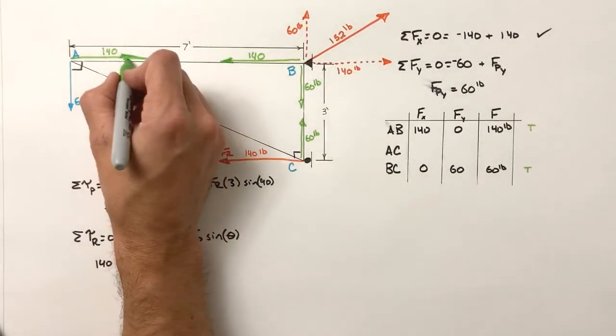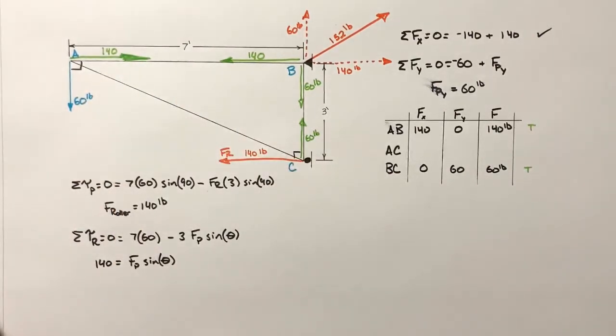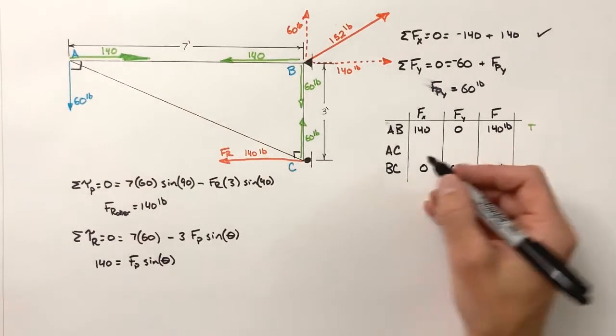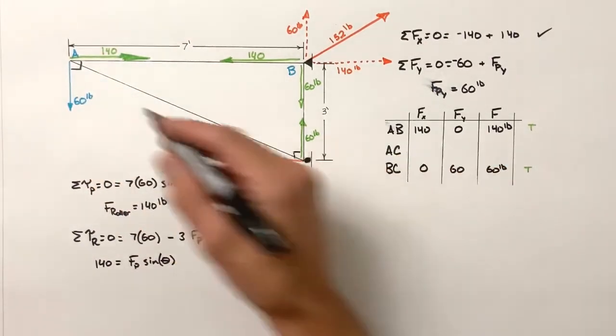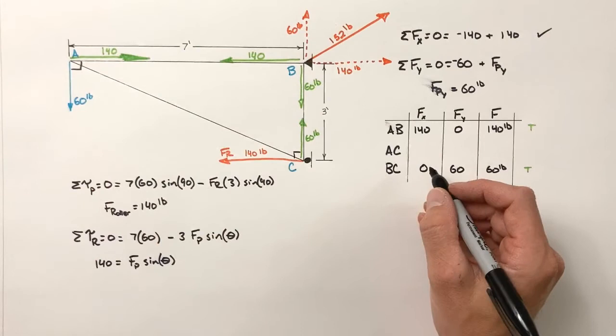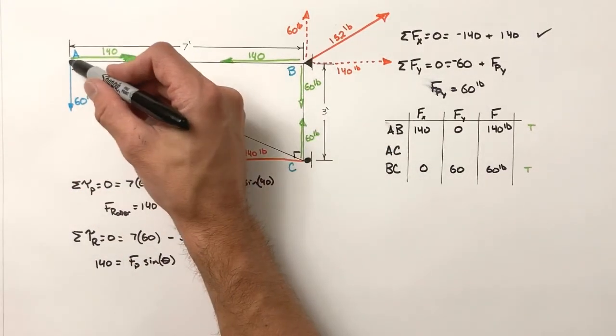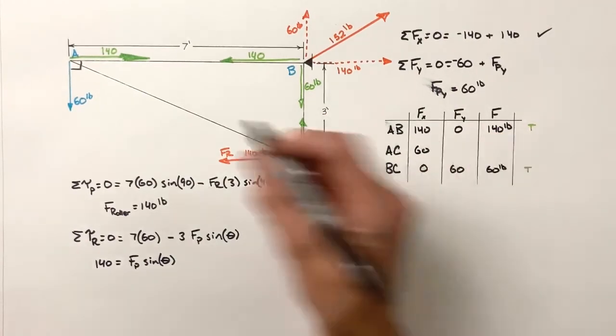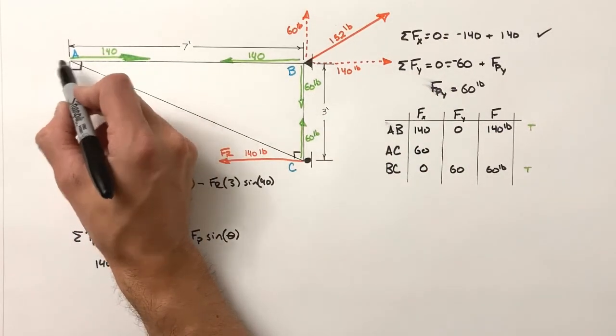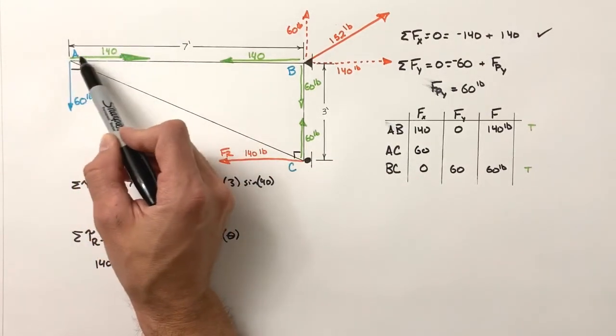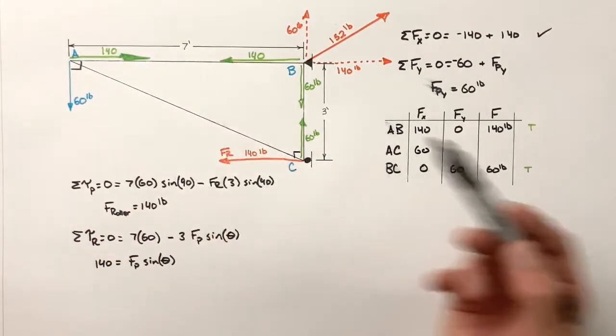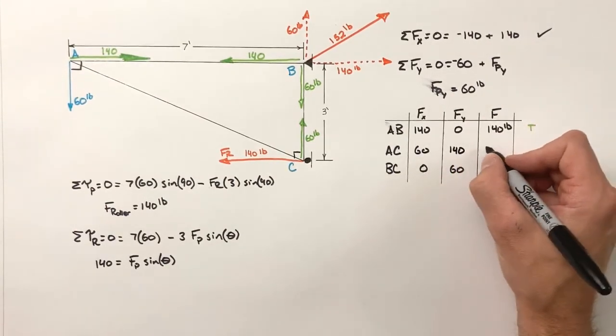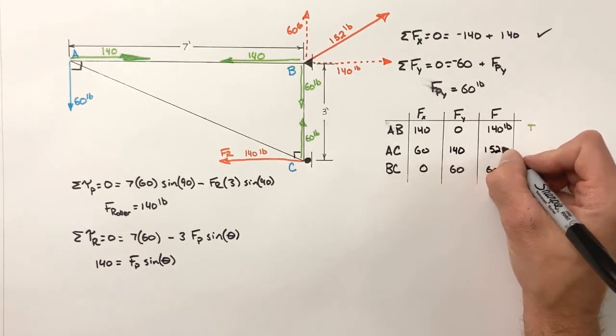Okay, so with this, we know AC in the y has to be 60 pounds, because AB cannot carry any of this load vertically. So AC has to be 60 vertically. And if you look at this point right here, AC has to be acting horizontally with 140 pounds to counteract this 140 to the right. Do the math on it again, and you'll find that this is carrying a force of 152 pounds.